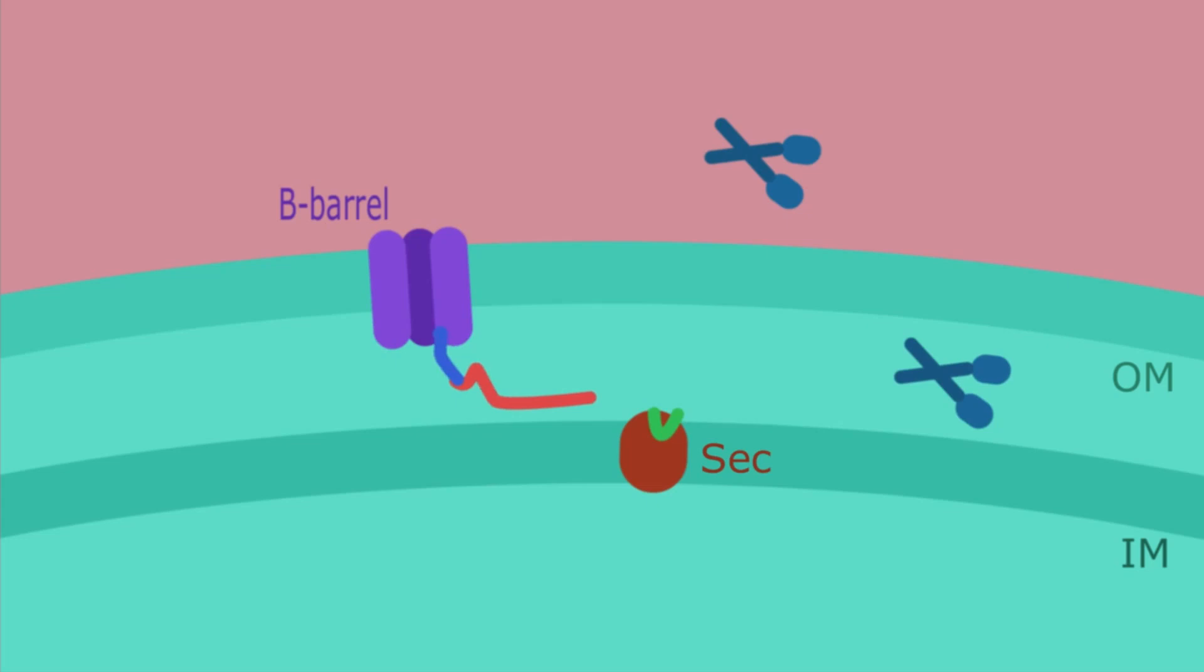In this illustration the beta barrel is already illustrated, but you could imagine it like this blue part here creates a beta barrel that the passenger domain in red can then travel through.